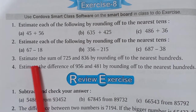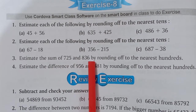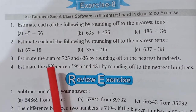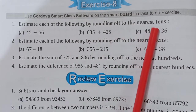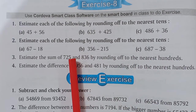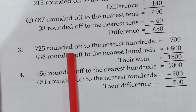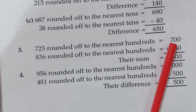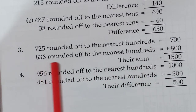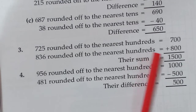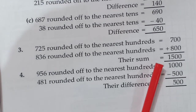Next question: estimate the sum of 725 and 836 by rounding off to the nearest hundreds. 725 rounded off to the nearest hundreds equals 700. And 836 rounded off to the nearest hundreds equals 800. Their sum: 700 plus 800 equals 1500.